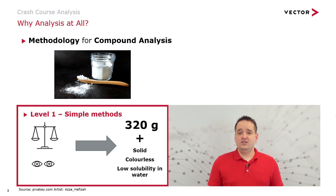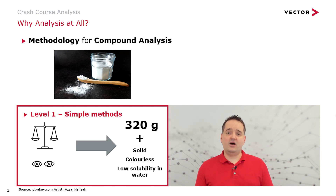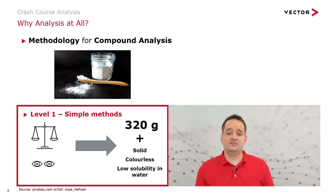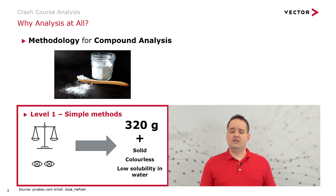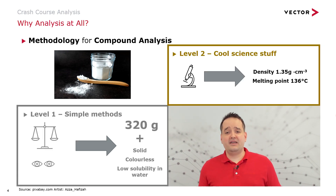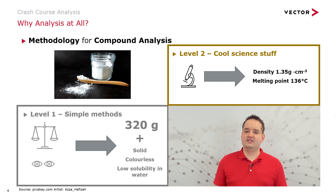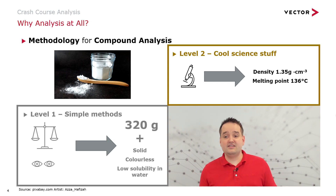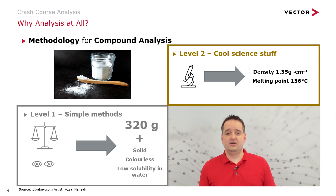At level one we can use simple methods — for example, put it on a scale or observe it visually — and we would get information like it's 320 grams, it's solid, it's colorless powder. But this does not really impact our decision whether to take the substance or not. So let's apply some scientific methods, like a microscope, to get values like density or melting point. Still, this has less impact on our decision.